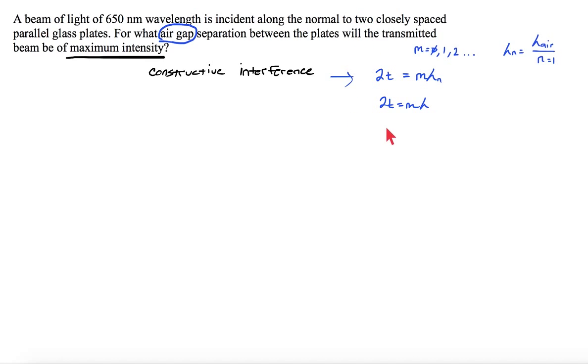For what air gap separation? Well, we can do thickness equals m lambda over 2. We could probably assume we're not talking about 0 thickness, and we're probably talking about the first or the smallest thickness. So we'll use order 1. My thickness should be equal to lambda over 2. So 650 nanometers divided by 2 should simply give us 325 nanometers.